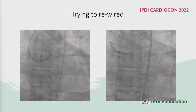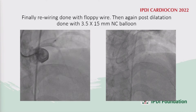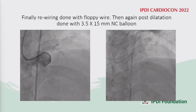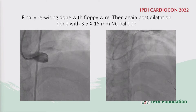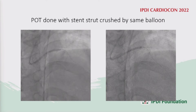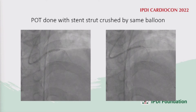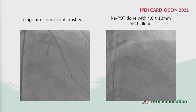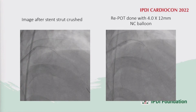They attempted to rewire, and ultimately succeeded in advancing a floppy wire. Post-dilation was done again with a 3.5 x 15 mm NC balloon. The port was done again, and the protruding stent portion was crushed by the same balloon. Here is the image after the stent was crushed, and re-POBA was done with a 12 mm NC balloon.